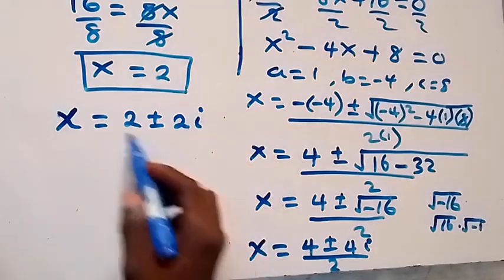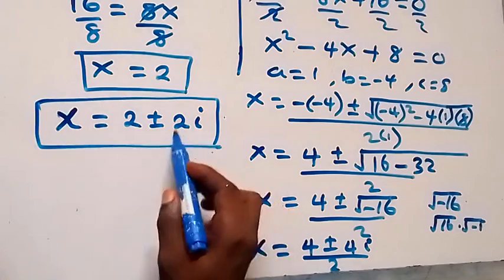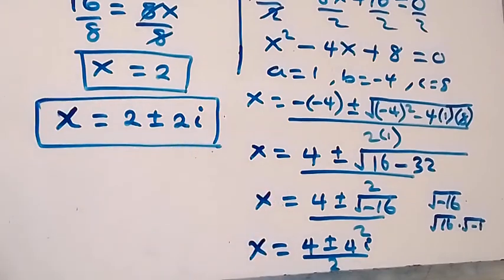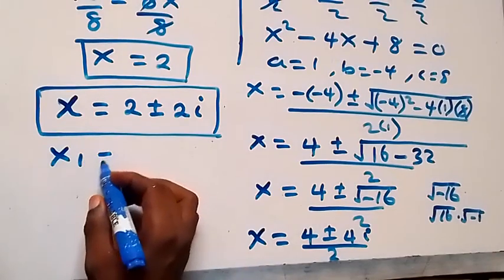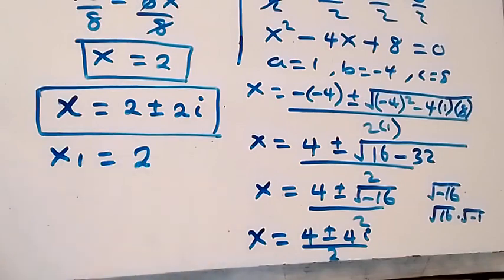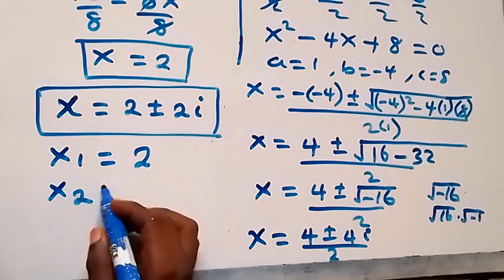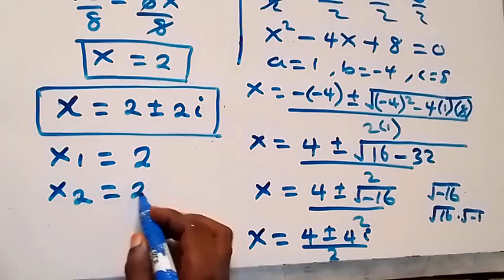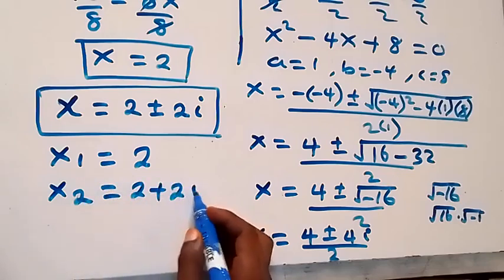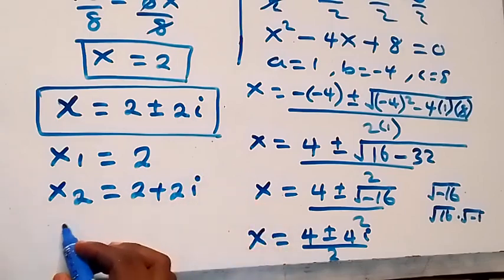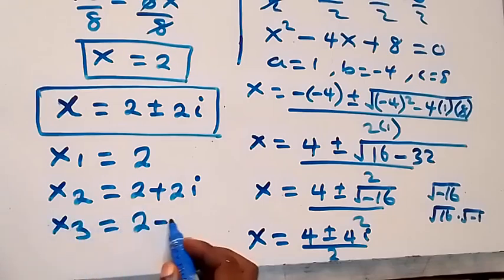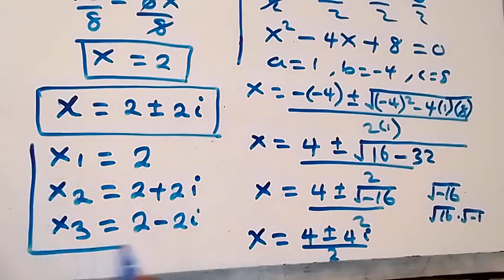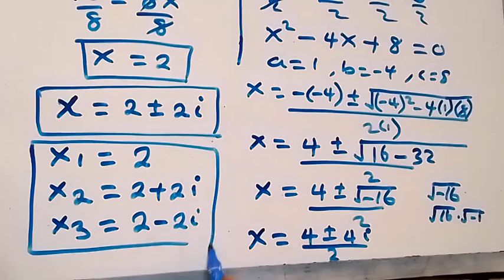Dividing through, 2 goes into 4 and into 4i, reducing to x equals 2 plus or minus 2i. So we have complex solutions. We can conclude: x₁ equals 2, x₂ equals 2 plus 2i, and x₃ equals 2 minus 2i. These are all the solutions to this given problem.